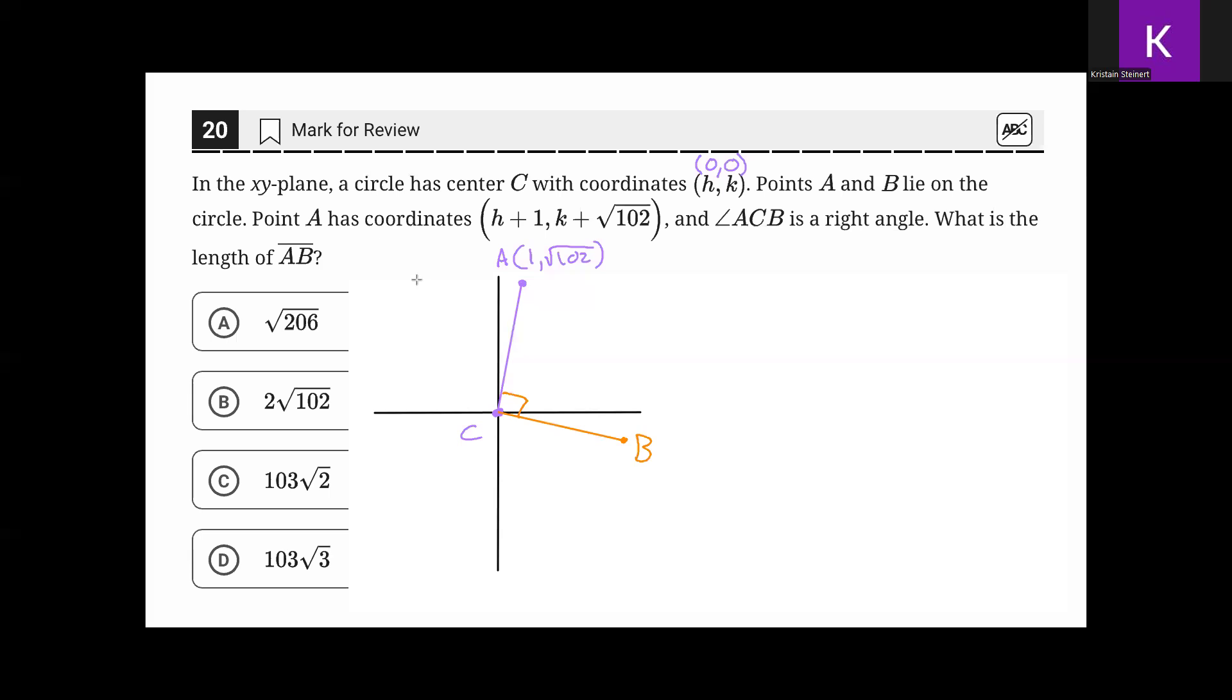And this would be the circle that we have so far, centered at point C and going through the points A and B. Now one thing to notice, AC and CB both are a radius for the circle. That means AC and BC are the same length.